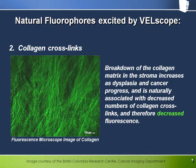The major contributor to stromal fluorescence is collagen and the collagen crosslinks that help maintain the structural integrity of the collagen matrix. Collagen crosslinks fluoresce strongly in the green when excited by blue light, as can be seen in this fluorescence microscope image of collagen. As dysplasia and cancer progress, the collagen matrix starts to break down to make way for the cancer to invade at the basement membrane. This breakdown is associated with decreased numbers of collagen crosslinks, and therefore decreased stromal fluorescence.